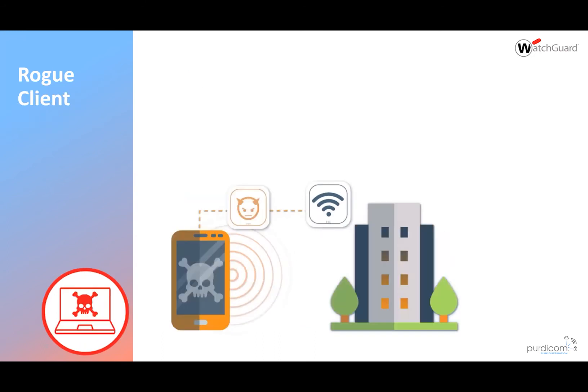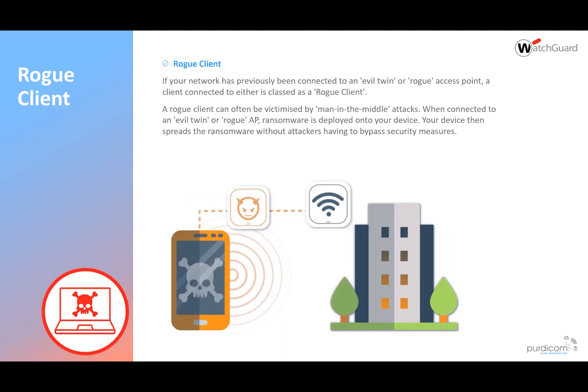Rogue clients are where a client has already connected to a rogue access point or an evil twin, meaning that machine could be infected with a man-in-the-middle attack. You need to make sure those clients are protected so they can't connect to those networks, or if they have connected, they don't reconnect to the normal network until they've been scanned and cleaned.